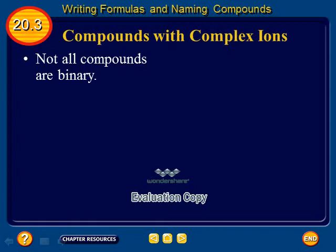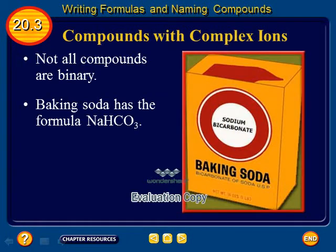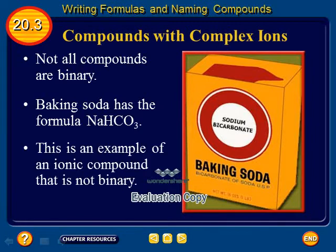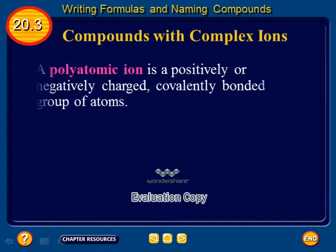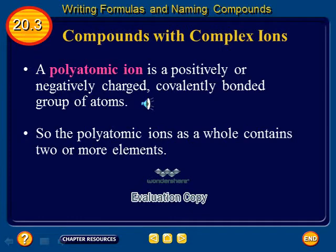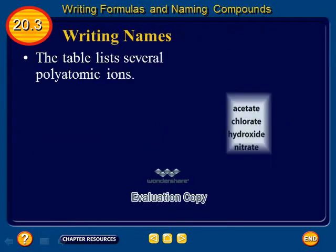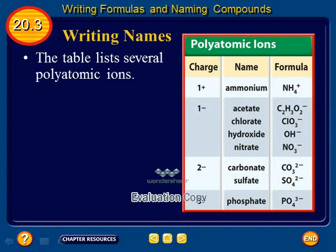Not all compounds are binary. Baking soda has the formula NaHCO₃. This is an example of an ionic compound that is not binary. Some compounds, including baking soda, are composed of more than two elements — they contain polyatomic ions. A polyatomic ion is a positively or negatively charged covalently bonded group of atoms. The polyatomic ions as a whole contain two or more elements. The table lists several polyatomic ions.